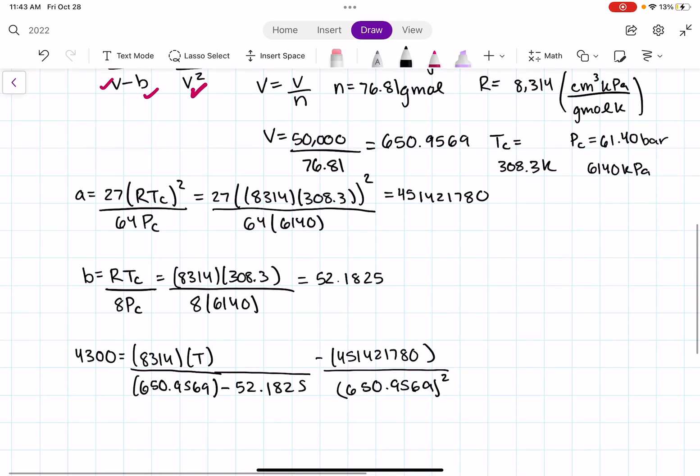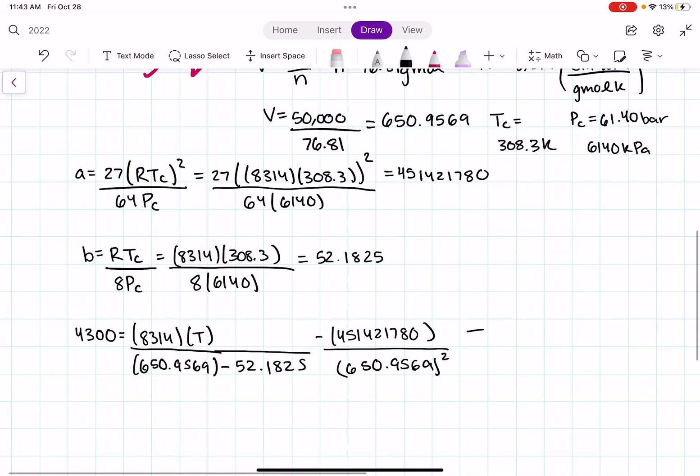Now we solve for T. You can solve for T using algebra, or the way I solve for T is by using my TI89 and using the solve function, so that I don't have to waste time doing algebra. And it gave me that my temperature is equal to 386.41 Kelvin.